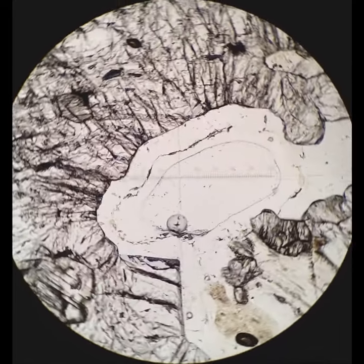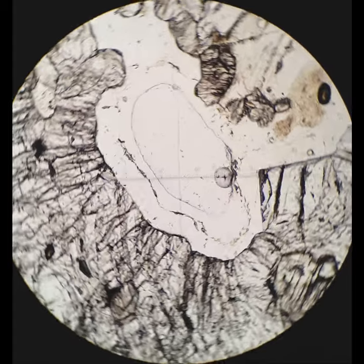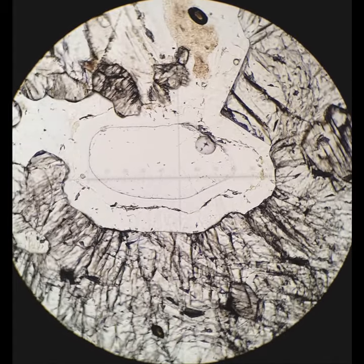So when I cross the polars, you'll see the garnet goes black, and that little core epoxy goes black. But there's this ring of quartz crystals that has a particular texture. It's called palisade quartz, like little pickets in a picket fence. And that is characteristic of quartz pseudomorphs after coesite.